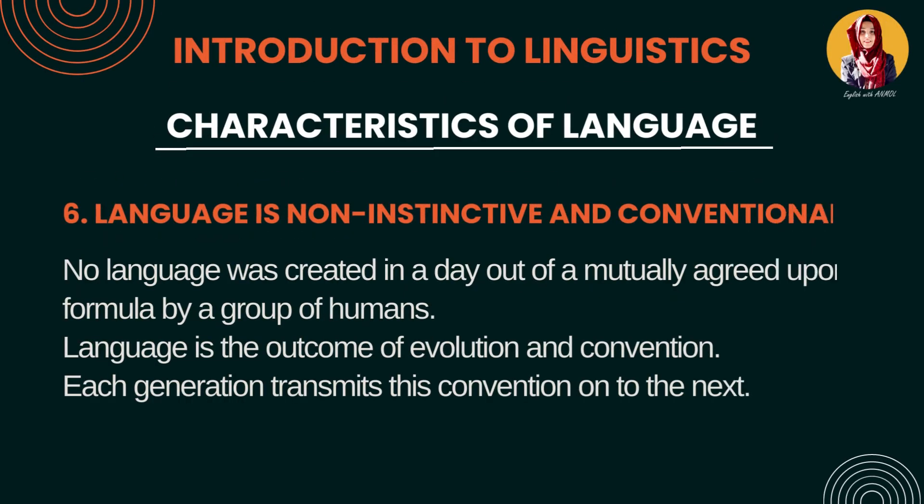Number 6: Language is non-instinctive and conventional. Language kabhi bhi ek din mein nahi banti — yeh kuch ghanton ka process nahi hai. Yeh ek gradual process hai, aahista aahista ek language apni form mein aati hai, so it's non-instinctive. Secondly, language is conventional — language ke jo meanings hain woh generation to generation transfer hote hain. Jo humne conventions aur meanings associate ki hain, woh sab generation to generation transfer hoti chali jaati hain.